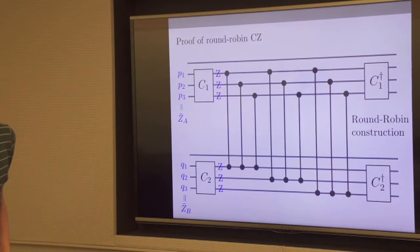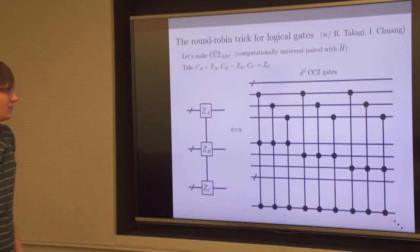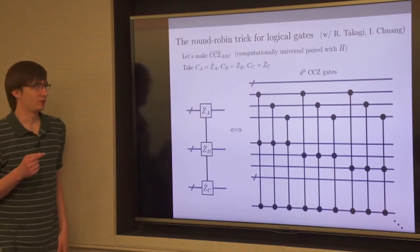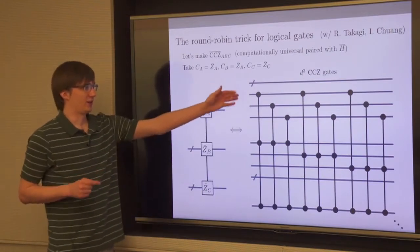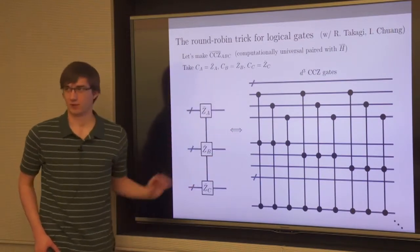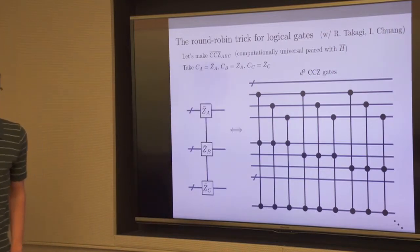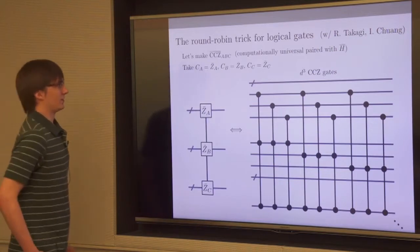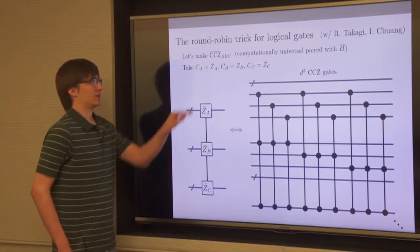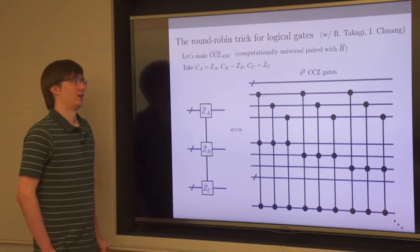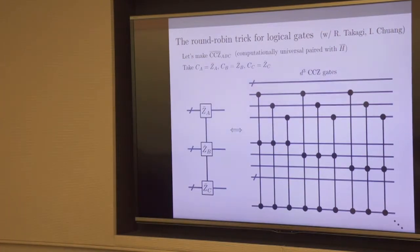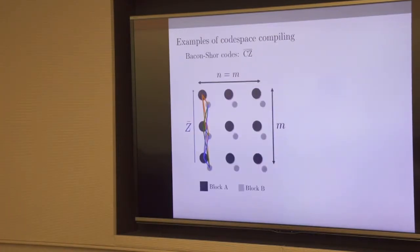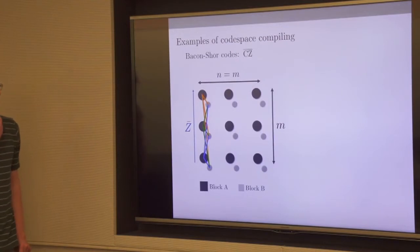We call this the round-robin construction — it's round-robin because everyone in the first block meets everyone in the second. This generalizes to implement CCZ on any three stabilizer codes, by connecting every qubit in the support of logical Z of each code block to every qubit in the support of the other two. This is important because CCZ is a non-Clifford gate from the third level of the Clifford hierarchy, and is universal together with H.